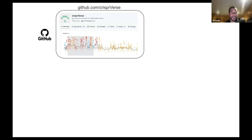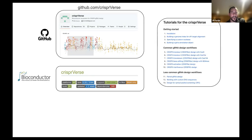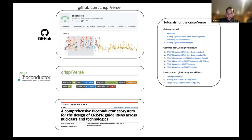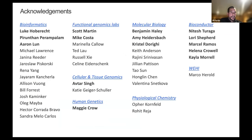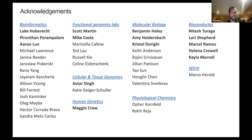All of the packages are in Bioconductor, and we also have a CRISPRverse GitHub organization where we consolidate all of the packages and provide tutorials — a long list of tutorials for designing your own guide RNA libraries in different contexts and modalities. Our work was just published recently, a couple of weeks ago, in Nature Communications. I want to thank all of my colleagues in bioinformatics, my colleagues in the functional genomics labs in the molecular biology department, all of the Bioconductor community, and in particular the five Bioconductor reviewers who really helped improve our packages.